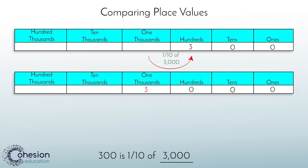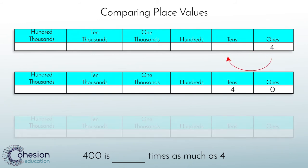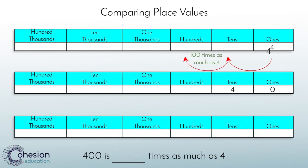Let's look at one more example: four hundred is blank times as much as four. Using the place value chart, you can see that if we place the number four in the ones place, the place to the left is ten times as much, and the hundreds place — two places to the left — is one hundred times as much. Therefore, four hundred is one hundred times as much as four.